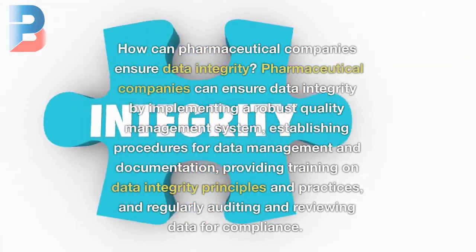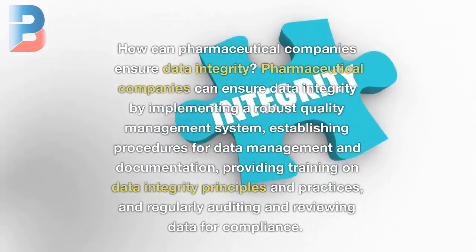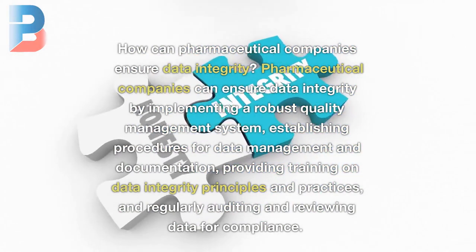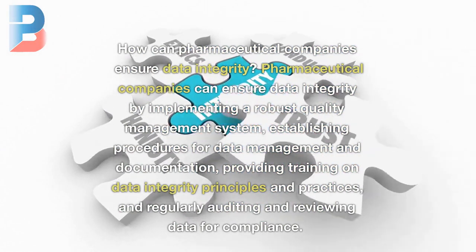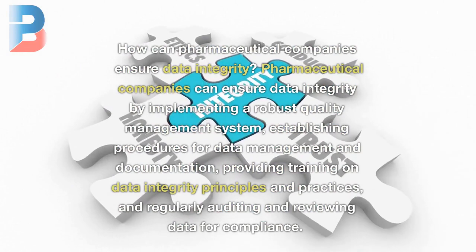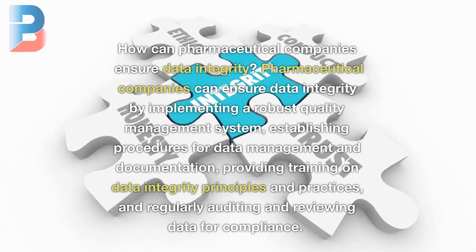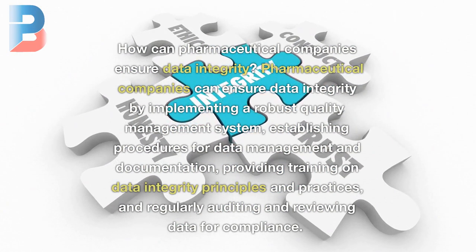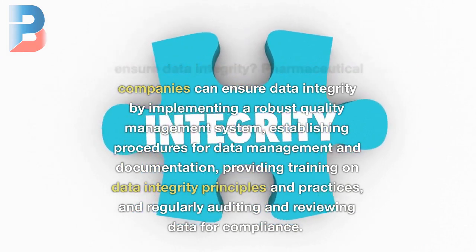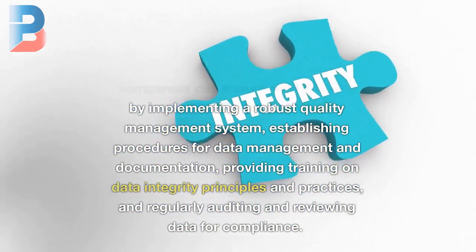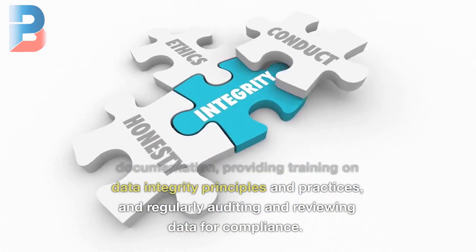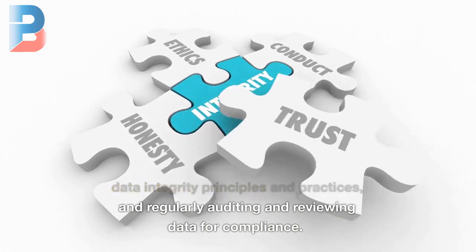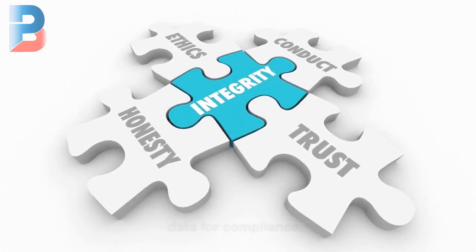How can pharmaceutical companies ensure data integrity? Pharmaceutical companies can ensure data integrity by implementing a robust quality management system, establishing procedures for data management and documentation, providing training on data integrity principles and practices, and regularly auditing and reviewing data for compliance.